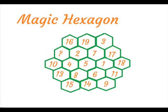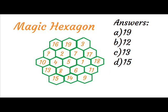This is the magic hexagon. The answers are A19, B12, C13, D15.